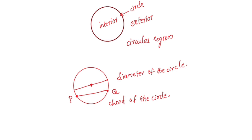All diameters have the same length. Now I have a diameter. I will put the center of the circle. The center of the circle is on the diameter, and the fixed distance from the center to the circle is the radius.